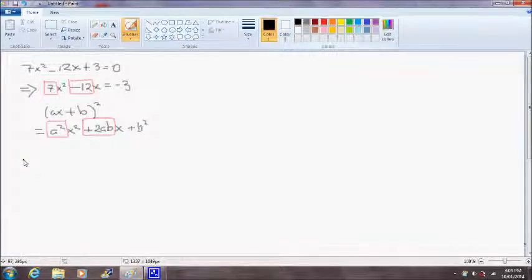So that would imply that a squared is equal to 7, and that means therefore a is equal to the square root of 7.